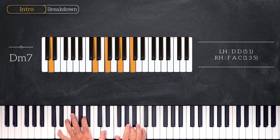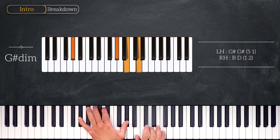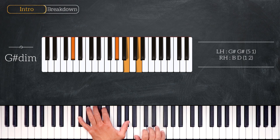Then right after we'll play a G sharp diminished, so we play octave G sharp on the left and B, D, F on the right.